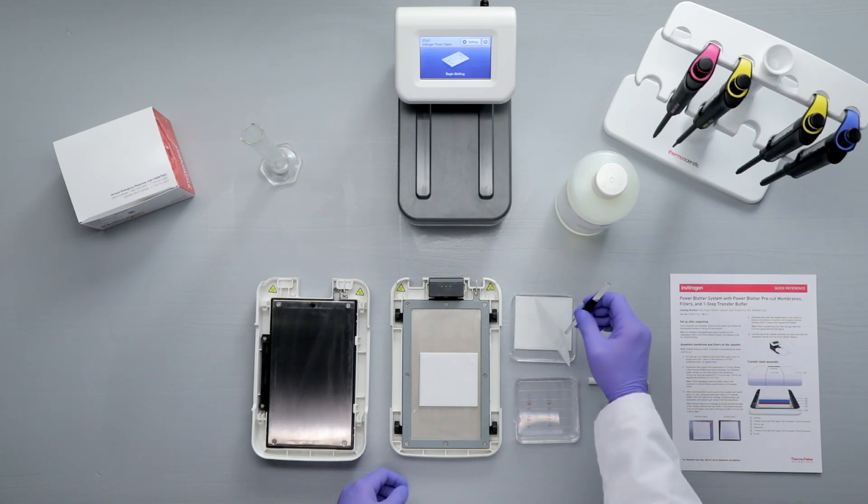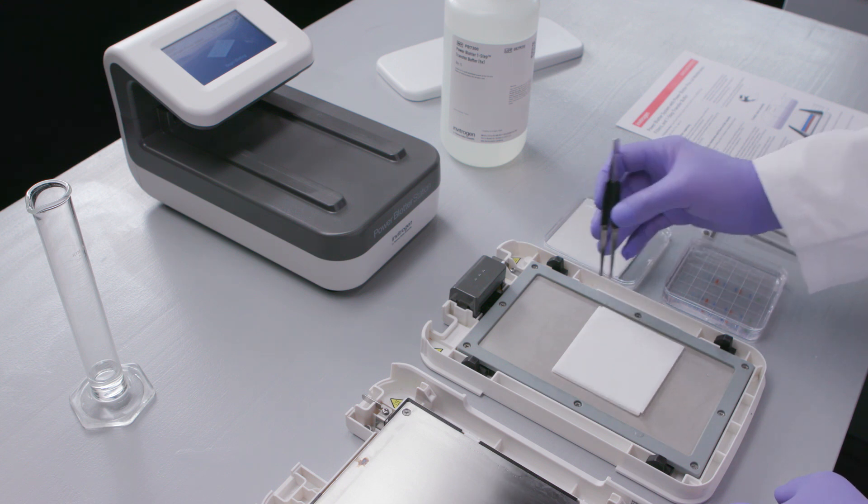Place the membrane on top of the filter papers and remove any trapped air bubbles using the blotting roller.